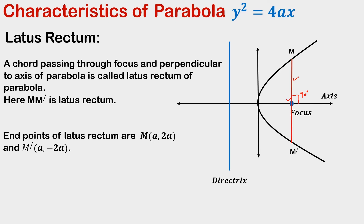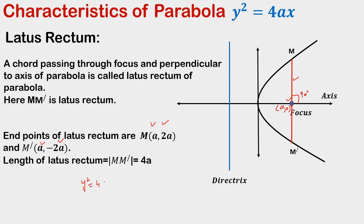The endpoints of the latus rectum are M(a, 2a) and M'(a, -2a), and the length of the latus rectum is 4a. To derive the endpoints, we know the focus has coordinates (a, 0), so substituting x = a into the standard parabola gives y² = 4a × a = 4a², which implies y = ±2a.